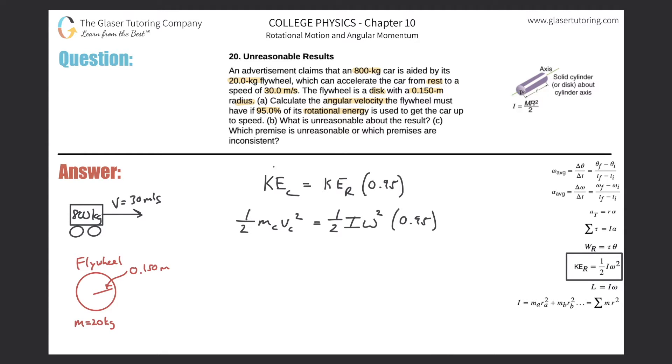We are being asked to find angular velocity, so now our job is to solve for omega. We can simplify a couple of things already - we can cancel these halves out and then rearrange some terms. Omega should be now equal to mc vc squared all divided by 0.95 times the moment of inertia, and that whole thing has to be square rooted because we have to find omega not omega squared.